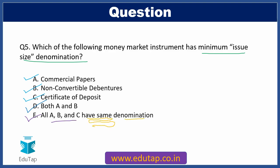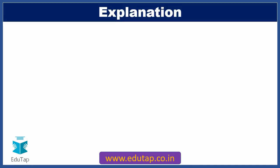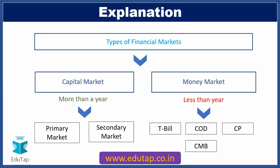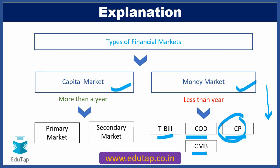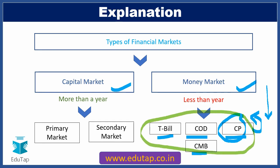This question can be a little tricky if your concepts are not clear. As we already know, there are two types of financial markets — capital market and money market. Money market instruments include treasury bills, certificates of deposit, commercial papers, and cash management bills. We already learned about commercial papers in the previous question. To solve question five, we need to compare the minimum issue denomination size of the various instruments.